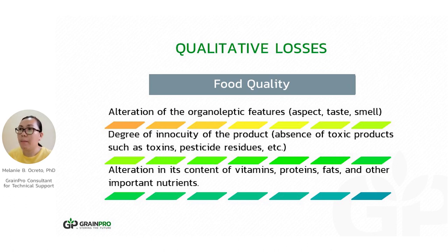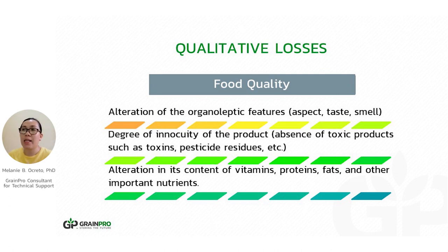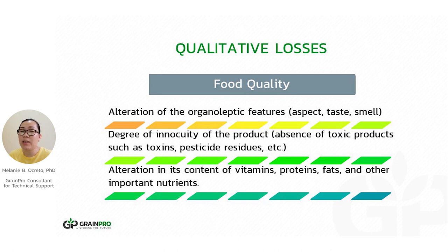In terms of food quality and qualitative losses, if there is a presence of agents such as insects and molds, there will be alteration of the organoleptic features — changes in taste, smell, flavor, and aroma. This organoleptic quality is very important for commodities consumed because of aroma, such as coffee and aromatic rice. If quality is affected, we will have a lot of problems because we could not demand a better price.